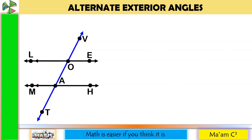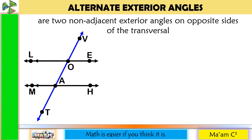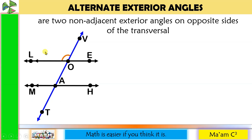The next one is alternate exterior angles. These are two non-adjacent exterior angles on opposite sides of the transversal. When we say exterior, it is outside. This is the interior part; therefore, the exterior part is above and below. So let us get an angle on the left side on the exterior part. Its partner should be on the right side, also exterior. So angle LOV and angle HAT are alternate exterior angles and they are congruent.